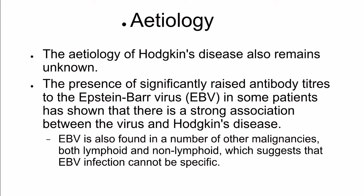Pathogenesis: Chromosomal abnormalities have been detected in the majority of cases studied. Etiology: The etiology of Hodgkin's disease also remains unknown. The presence of significantly raised antibody titers to the Epstein-Barr virus in some patients has shown a strong association between the virus and Hodgkin's disease. Epstein-Barr virus is also found in a number of other malignancies, both lymphoid and non-lymphoid, which suggests that Epstein-Barr virus infection cannot be specific for Hodgkin's disease.